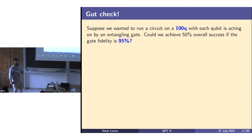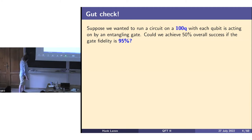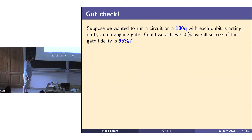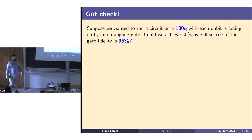Why not? The probability of getting it right is (1 - (1-p))^n, which in this case with p = 0.95 gives us (0.95)^n. So the success probability formula is essentially one minus the error rate raised to the number of gates.